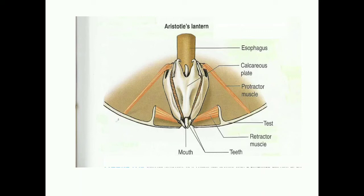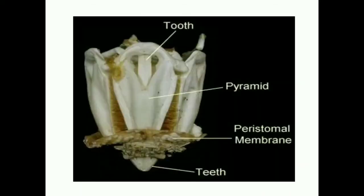There are two sets of muscles you can see around Aristotle's lantern: protractor and retractor muscles.